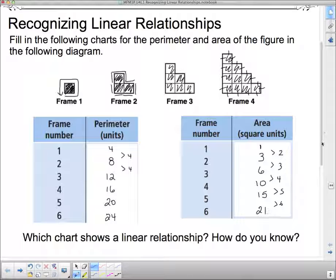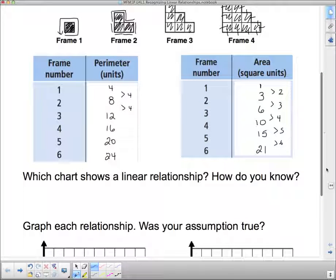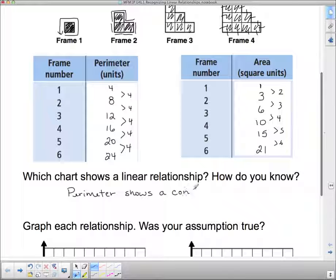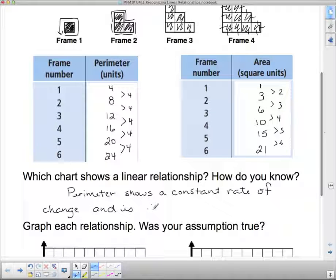Okay. So I filled in my tables. Which one's linear? Well, hopefully you remember from last unit that linear means constant. A constant way to change, or a constant rate of change, as it may be. This one's constant. It's going up by 4 every single time we go up by 4. So, perimeter shows a constant rate of change, and is therefore, that's what this means. Three little things together means, therefore, linear.